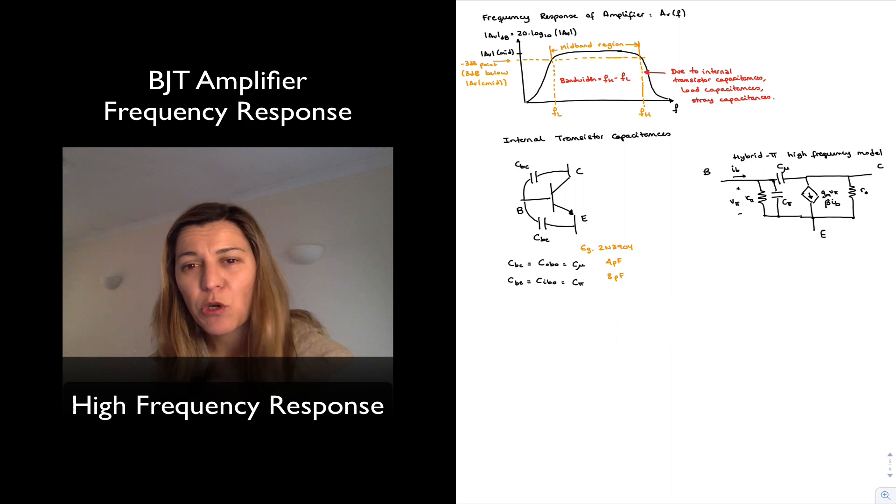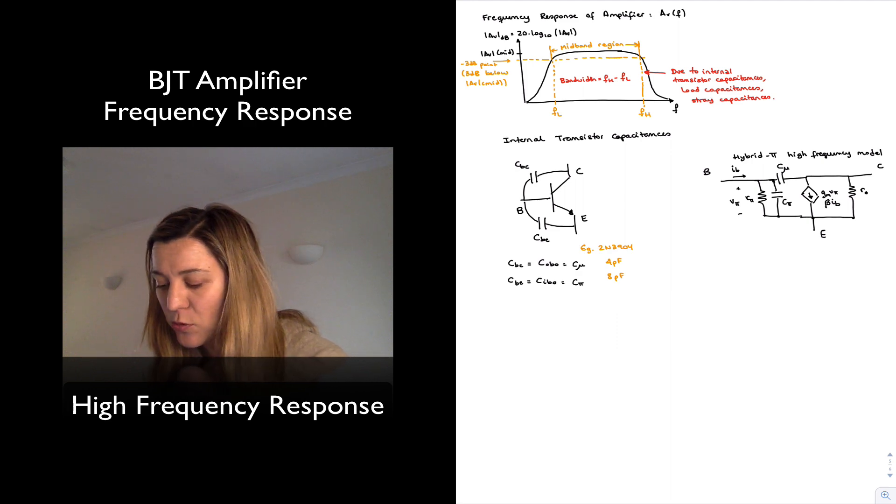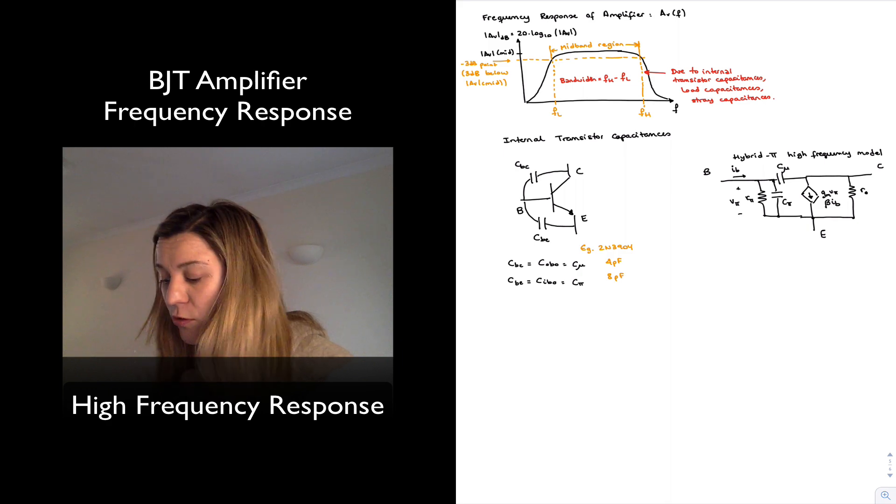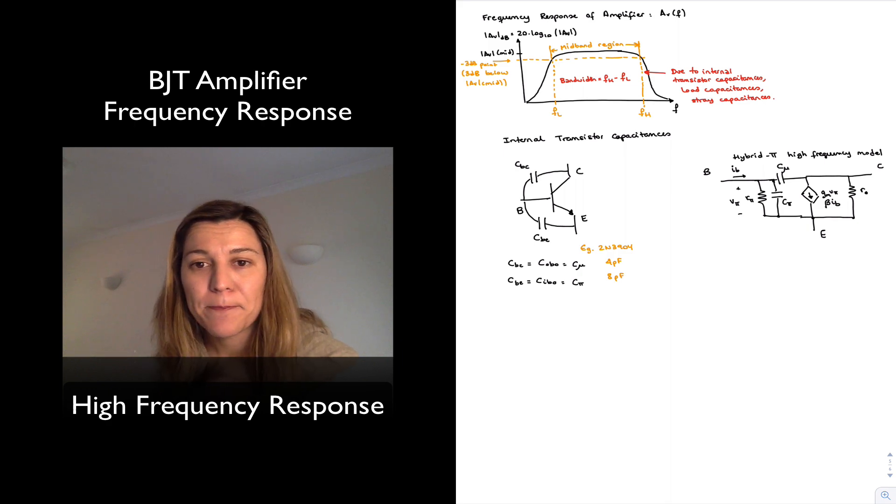Now, sometimes you will see a more complex high frequency hybrid pi model. For example, sometimes you will see a resistor Rx connected to the base, or a resistor connected in parallel with C pi, sorry, with C mu. And, you know, we're not going to be using that.